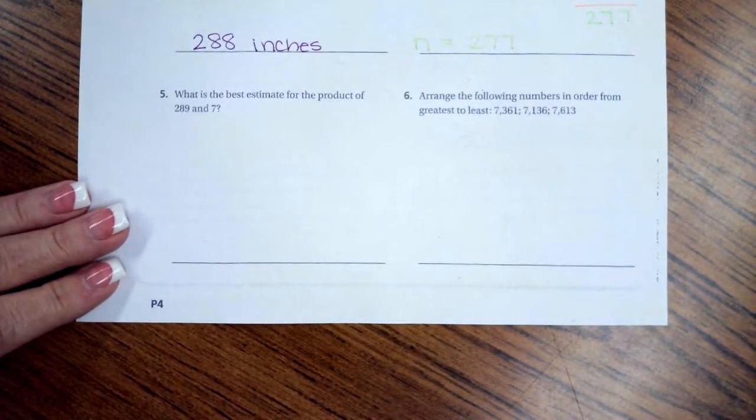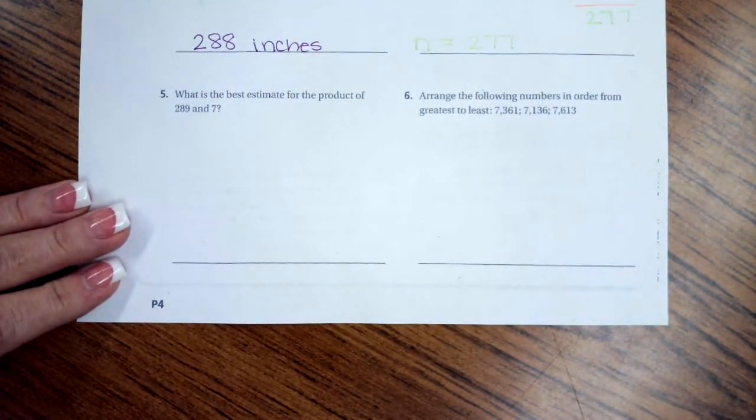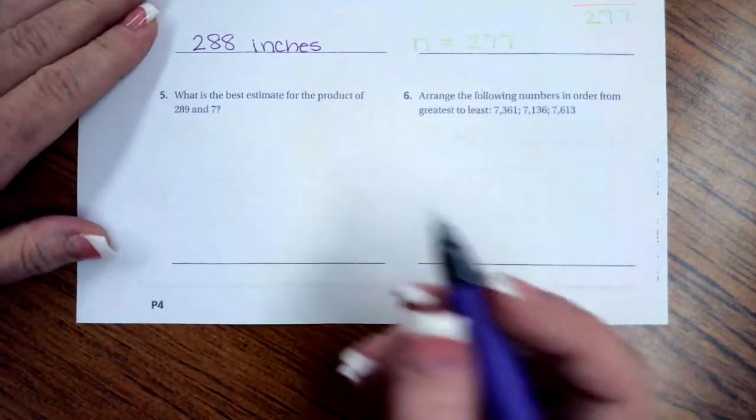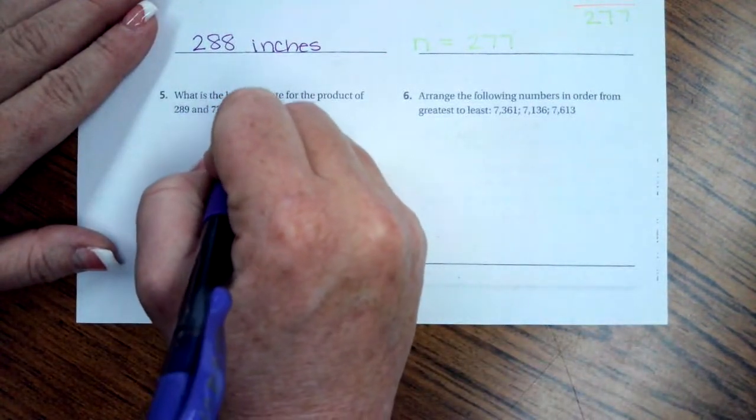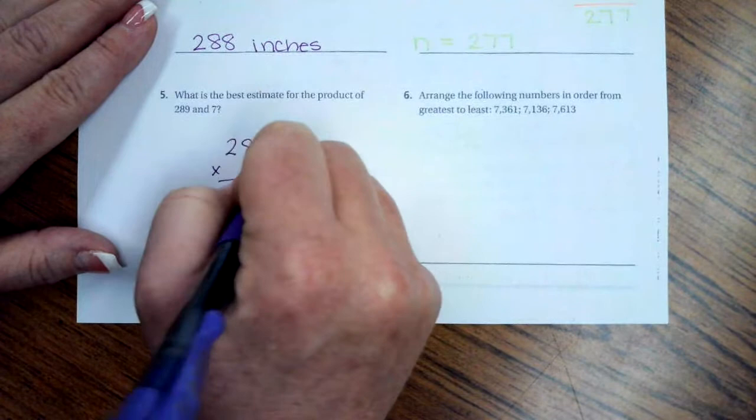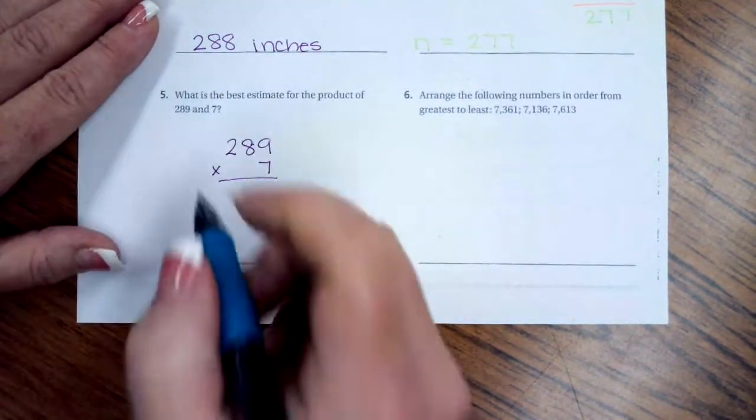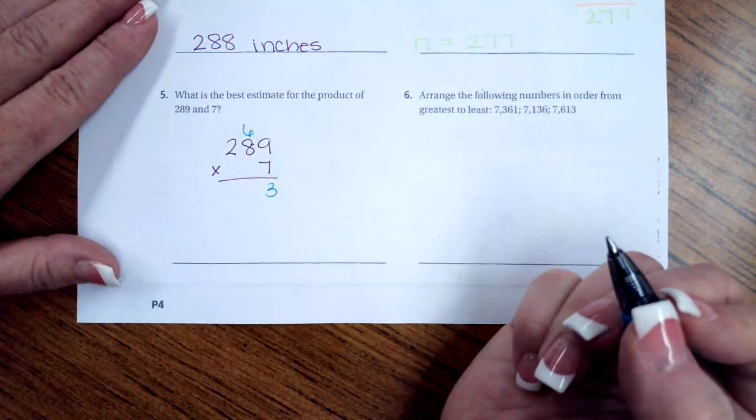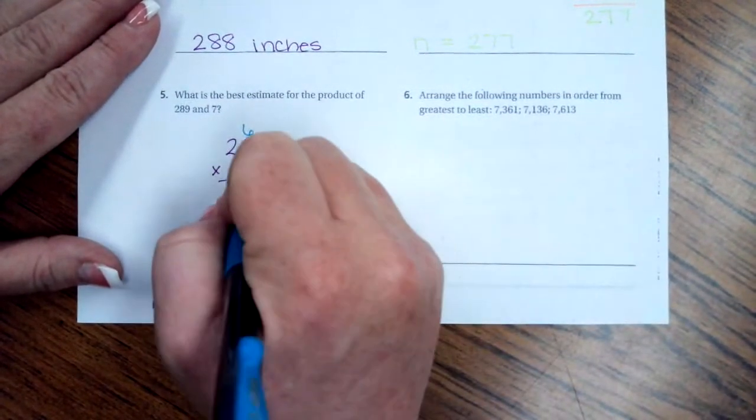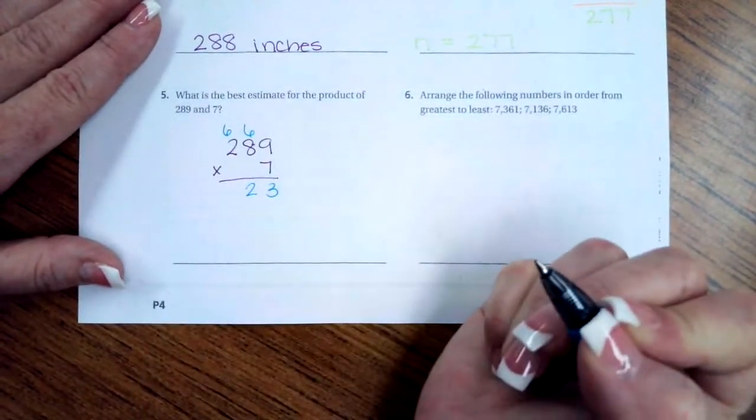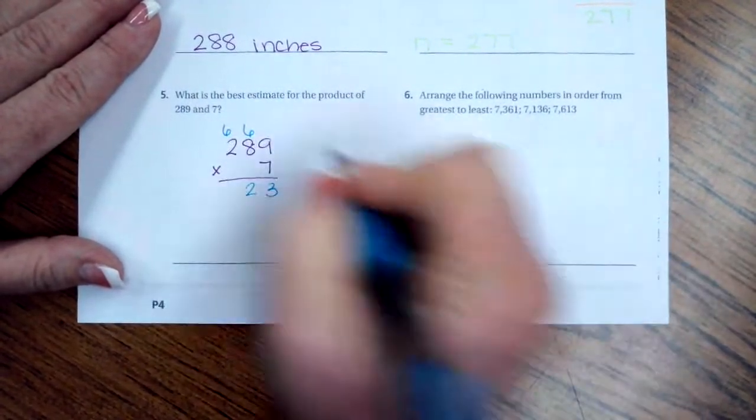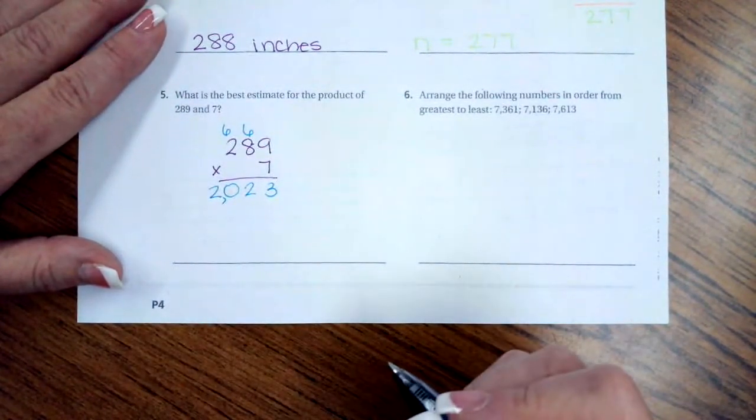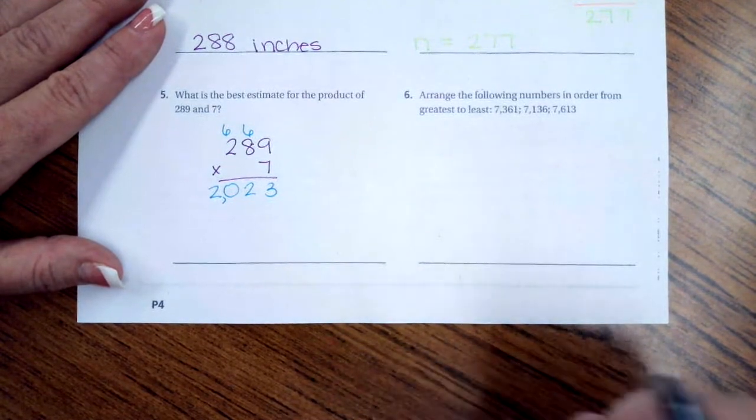Going down to number 5. It says, what is the best estimate for the product of 289 and 7? Well, product means that we are multiplying. So I'm going to go 289 times 7. 7 times 9 is 63. 7 times 8 is 56. Plus 6 is going to be 62. Carrying my 6. 7 times 2 is 14. Plus 6 is going to be 20. 2,023.